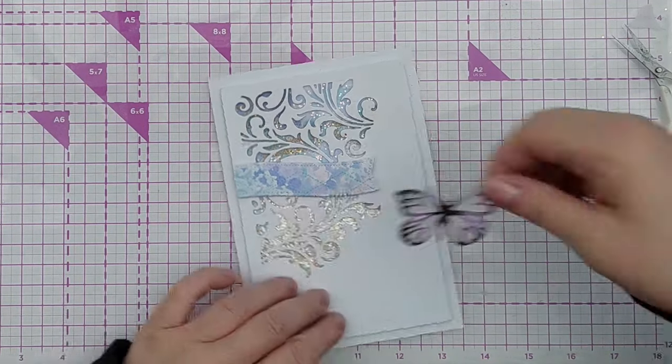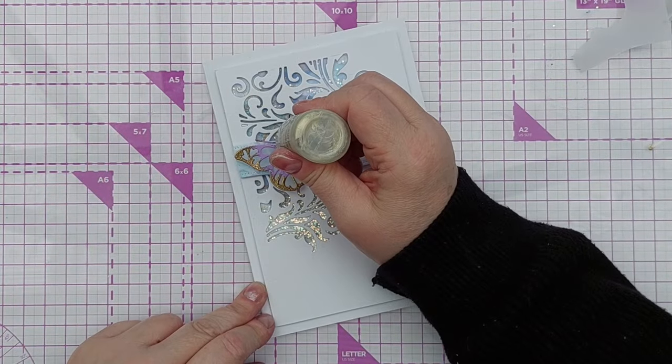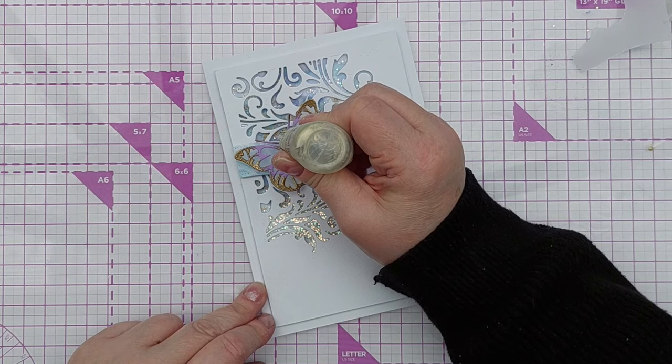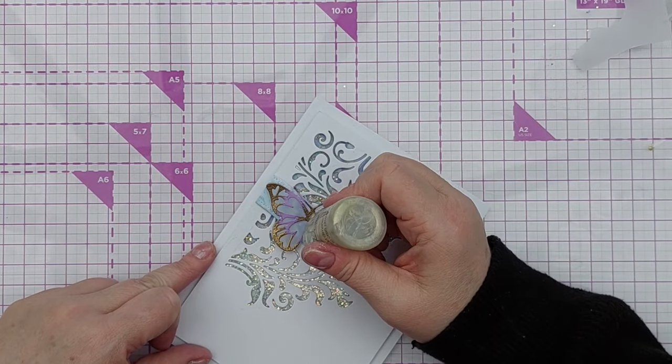I then added this using some tacky glue to my banner and to give the butterfly a body I pulled out my pale gold Nouveau drops and just drew a body on and that gives it a little bit of dimension.